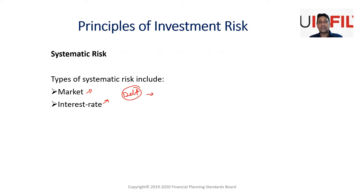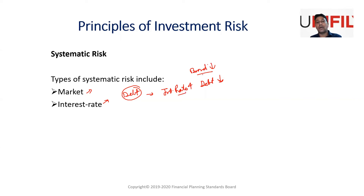Interest rate risk works as follows: if interest rates go up, your debt fund goes down, because the prices of bonds fall. Interest rates and bond prices have an inverse relationship. So if interest rates go up, bond prices go down — this is a systematic risk.